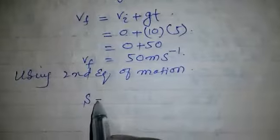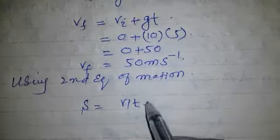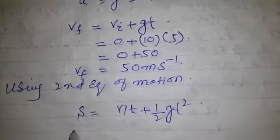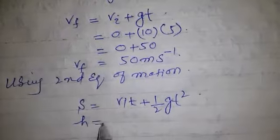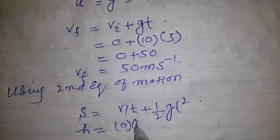s equals vit plus half gt squared. And height h equals 0 into t plus half into 10 into 5 squared.